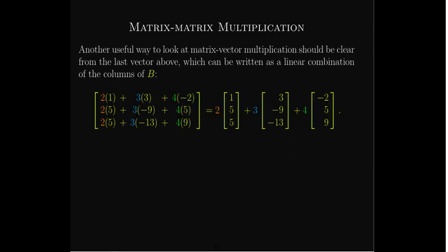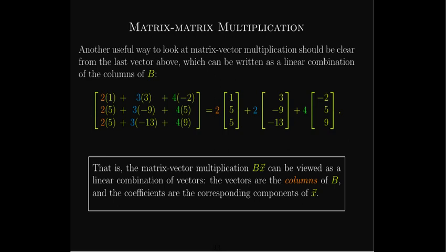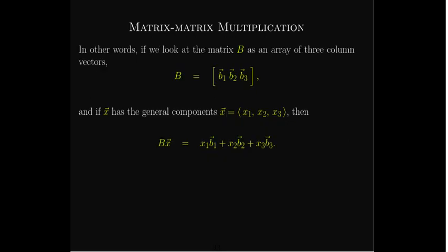If we form those dot products without collecting like terms, we get what we've been calling a column-centric view of matrix-vector multiplication — the matrix-vector product is a linear combination of the columns of the matrix, with coefficients coming from the corresponding entries or components in the vector. So if we look at B as having three columns B₁, B₂, B₃, then the product Bx is just x₁ times B₁ plus x₂ times B₂ plus x₃ times B₃.